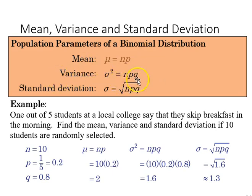And the variance adds q to that equation, the product of those three, and then the standard deviation, simply the square root of the variance.